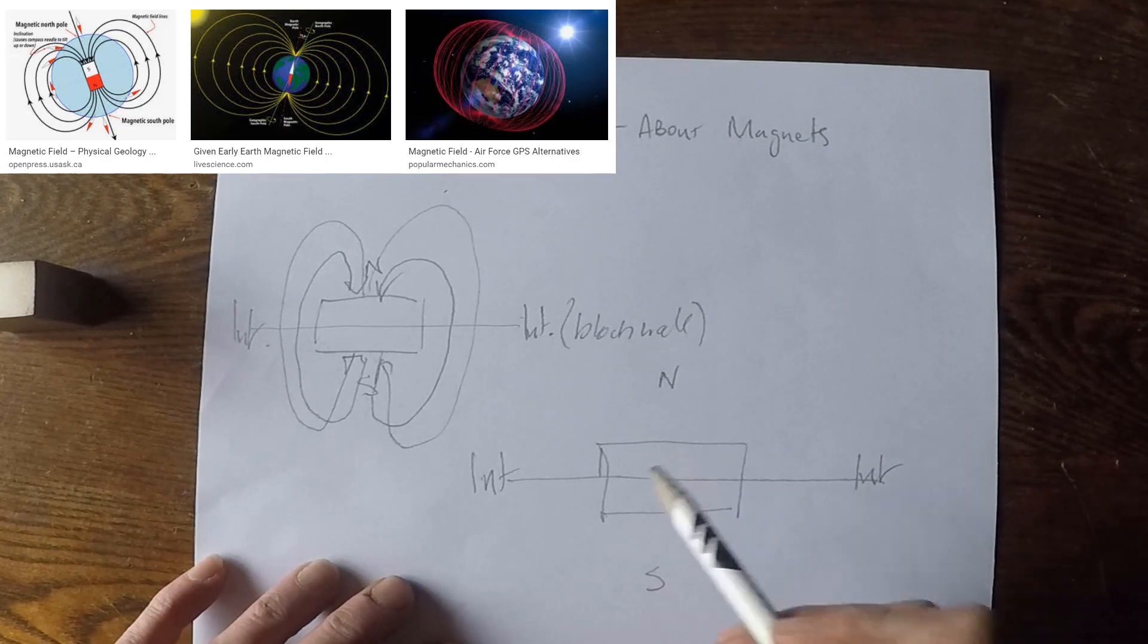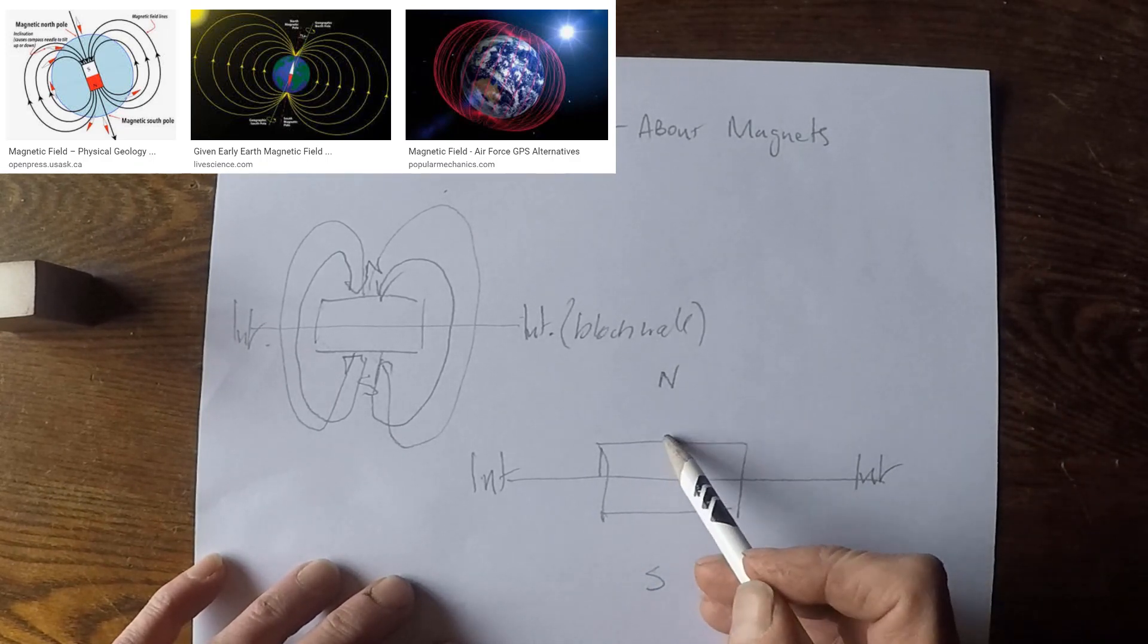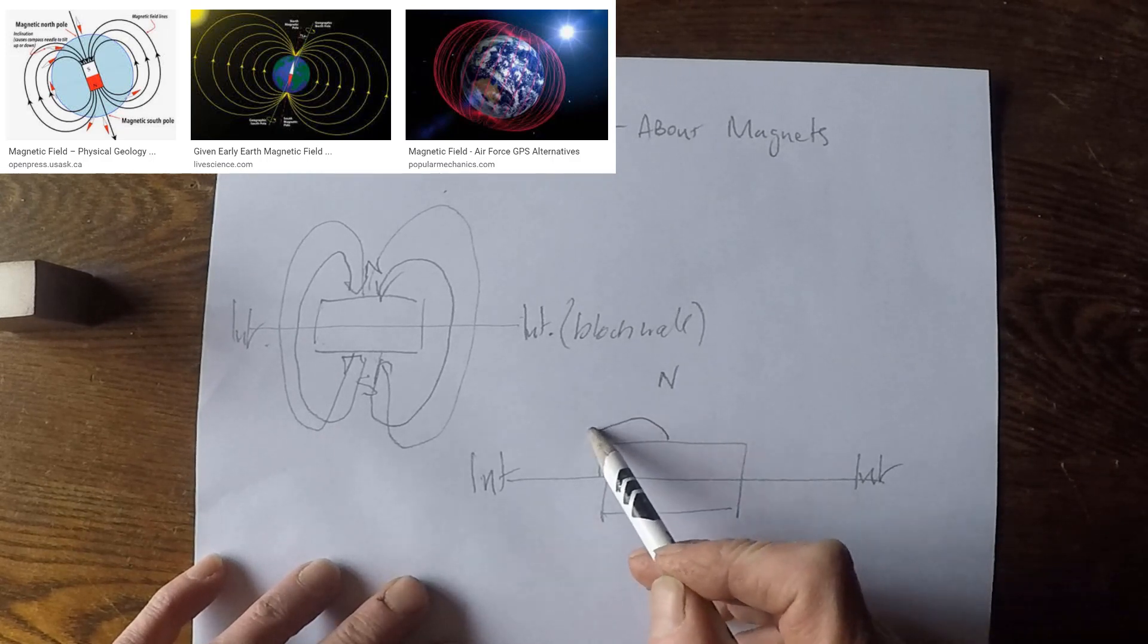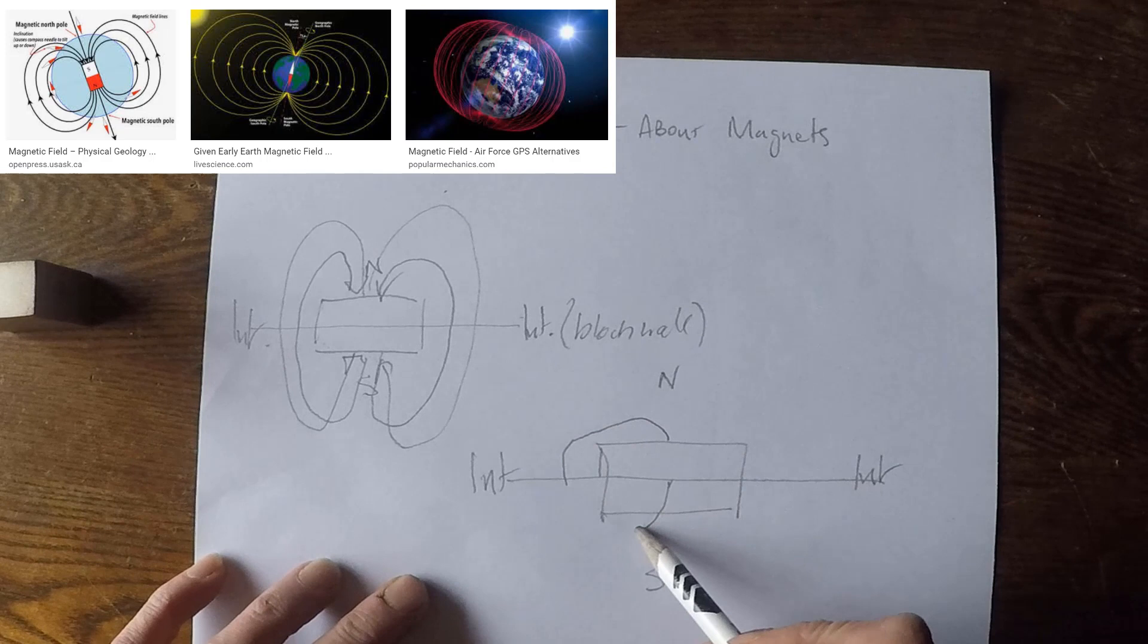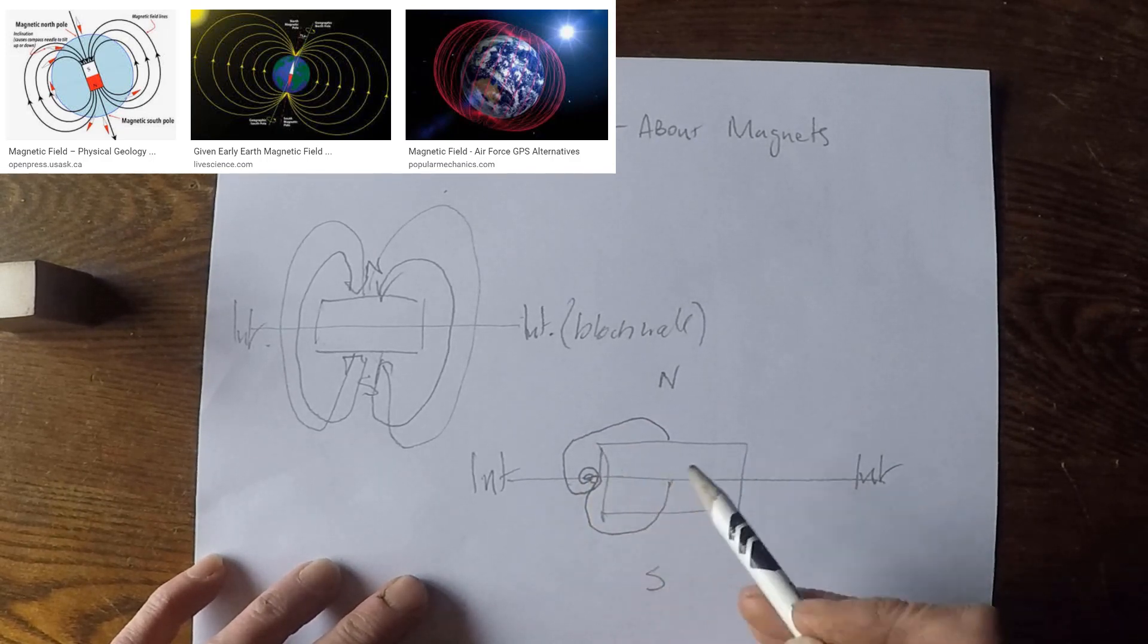I've shown this on video in my ferro cell videos. If you want to go through those, you will see this exact shape in one of them. But the north field comes out of here. And the south field comes out of here. And they scroll together, right there.